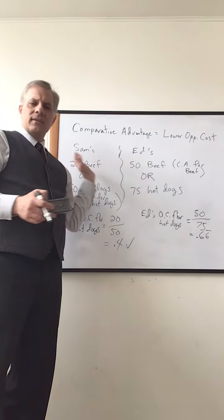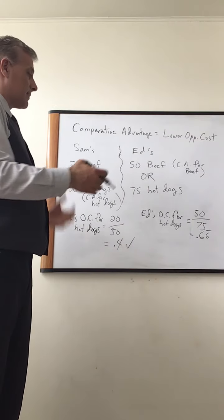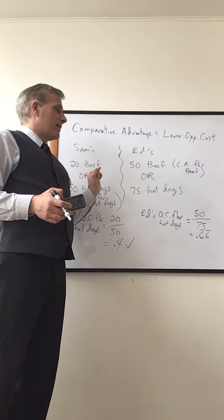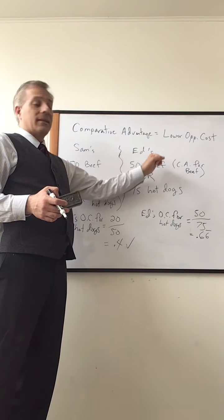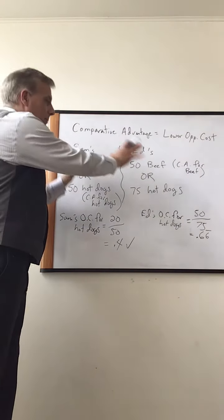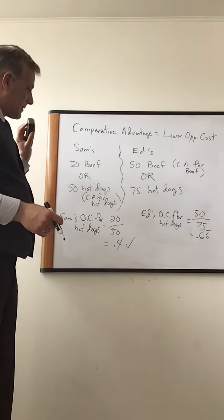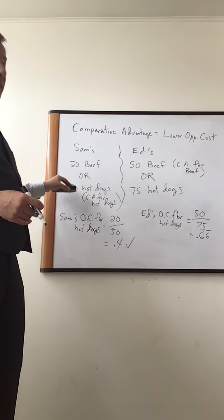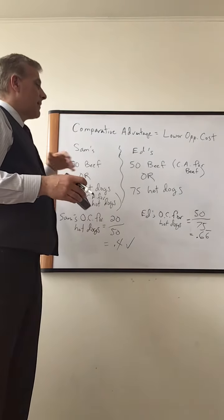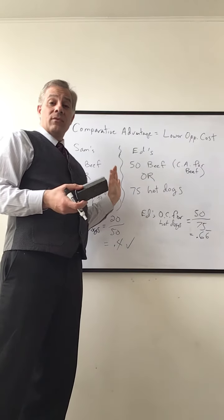And that comes up more in terms of countries, but it's just something to know that if they work out some type of specialization. So Sam should specialize in hot dogs if he works out a cooperative venture with Ed, and Ed should specialize in beef. And that's comparative advantage. It doesn't matter what the products are. It doesn't matter if this is South Korea and Japan, and this is computers and televisions. It's just the principle of comparative advantage and lower opportunity cost. They love to use that idea that you only have comparative advantage for one thing.